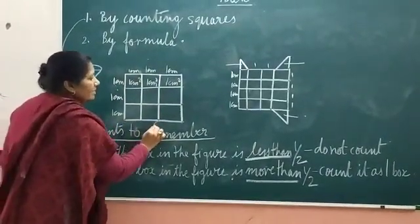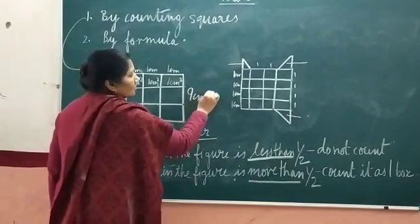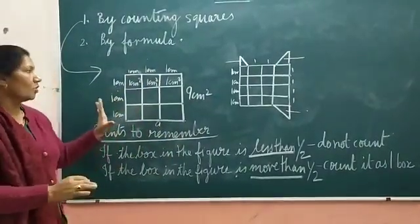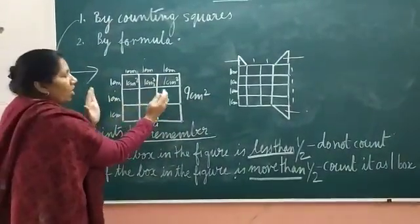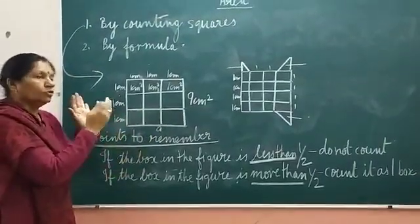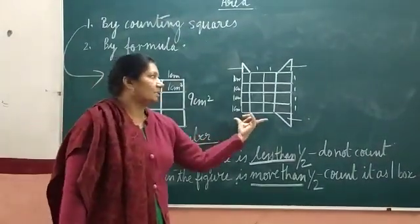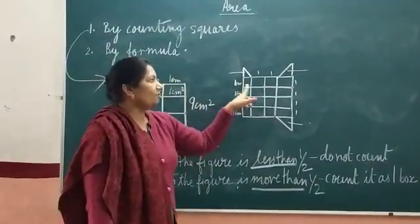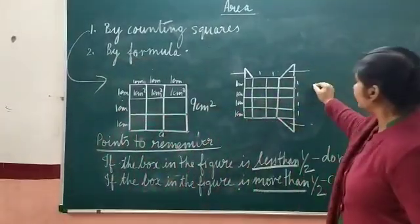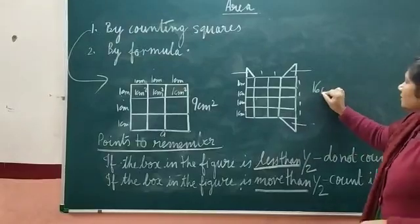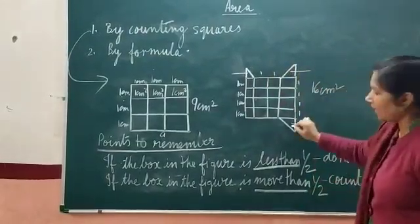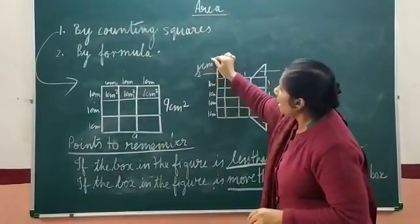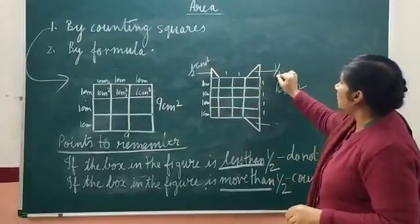This is a regular figure — all boxes are full boxes. You can see four blocks complete on this side and four on this side, so 16 blocks are full — 16 centimeter square. But what about these partial boxes? If you watch closely, these are half centimeter square.